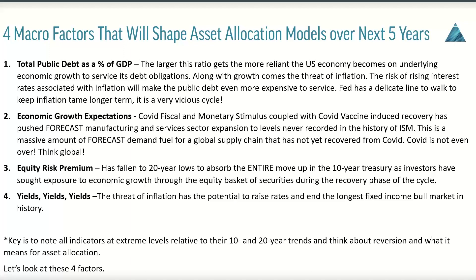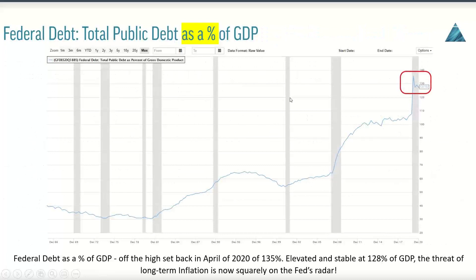What I want everyone to notice as we're working through these macro factor slides is to make note of the extreme levels of these trends and really try to think about what that means for your asset allocation — what it means specifically for your models. Let's go ahead and look at these four factors a little bit more closely.